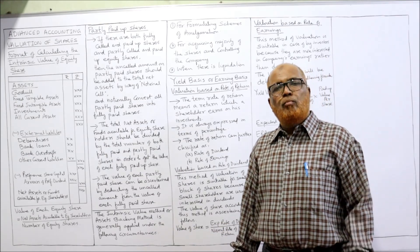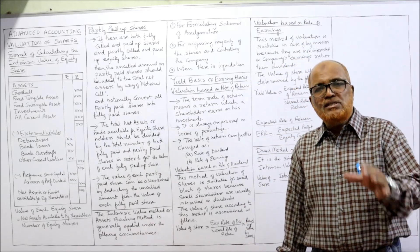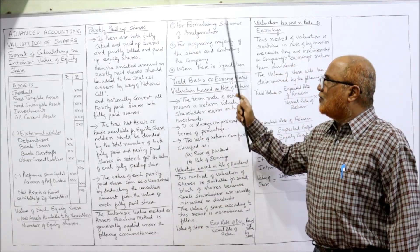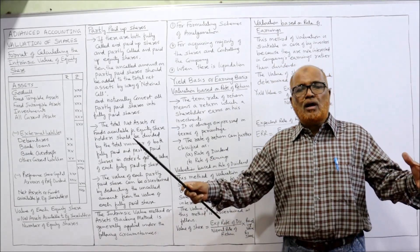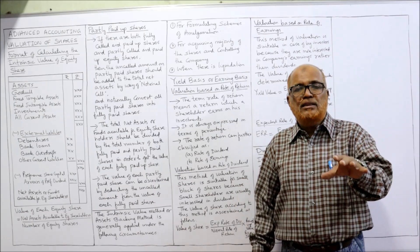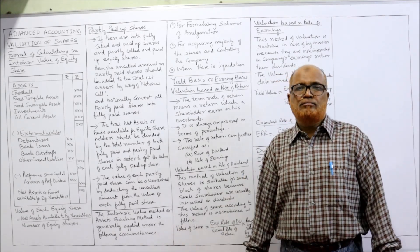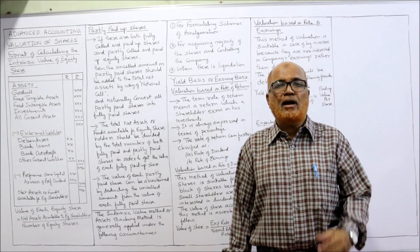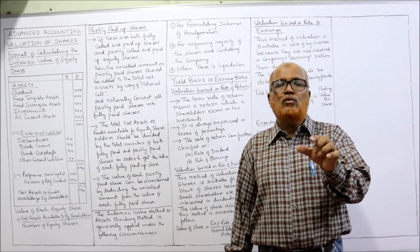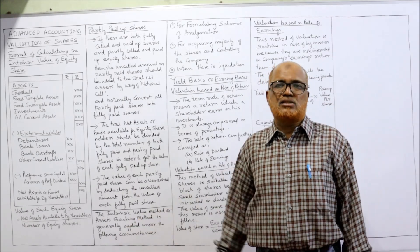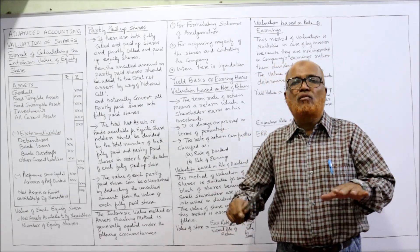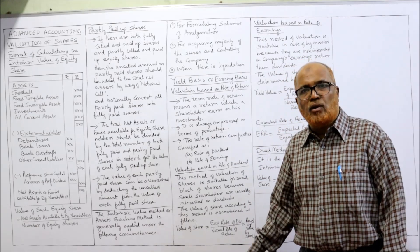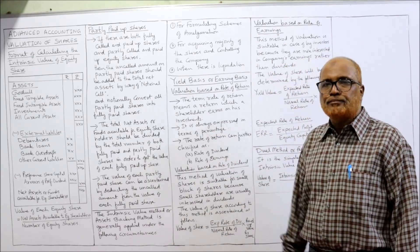The intrinsic value method, or net assets backing method, is generally applied under three circumstances. Both methods have their own advantages and limitations. First, for formulating a scheme of amalgamation — when two companies are merged, we find the value of the share by intrinsic value, not by yield method. Second, for acquiring a majority of shares and controlling another company. Third, when there is liquidation — when the company is wound up, we again calculate the value of shares according to intrinsic value method.